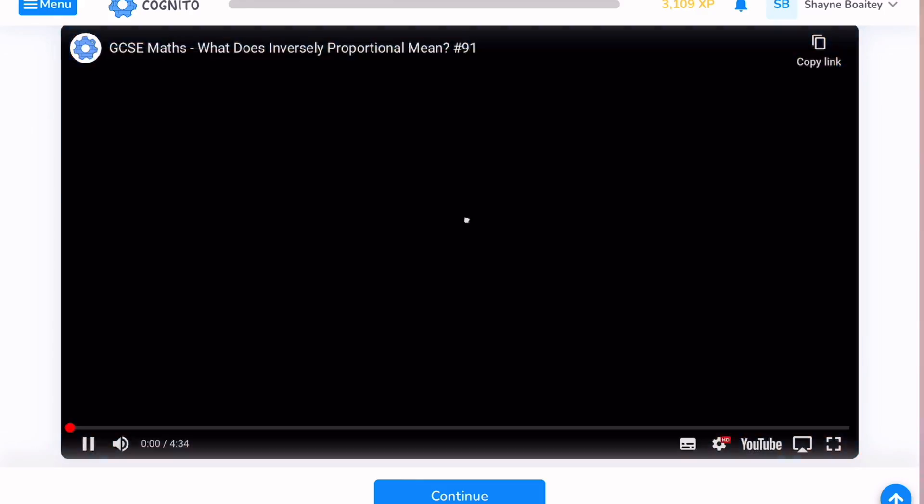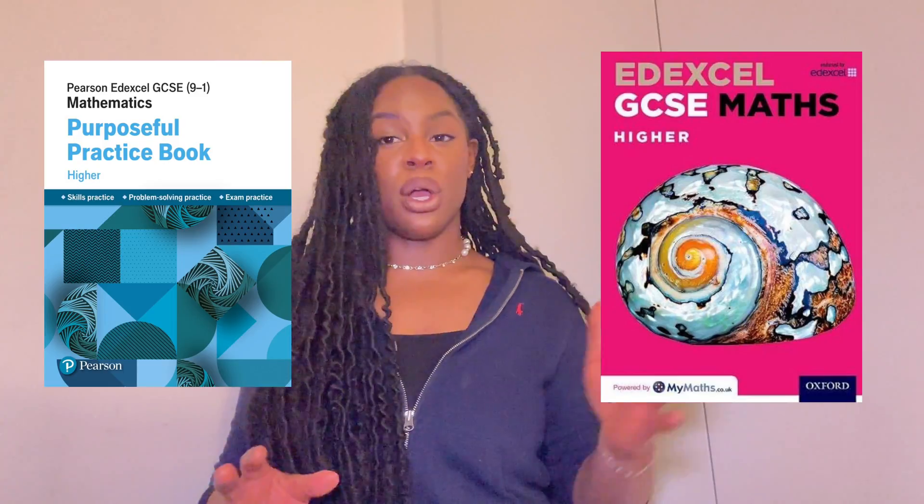Another resource you can use is Cognito. The maths is quite basic on there, but that's really good if you do foundation maths or if you just want to really understand the basics. Cognito has a website that breaks it all down. Everyone learns differently, so you might find it way easier to learn from Cognito than the GCSE Maths Tutor. The last learning resource I recommend is literally textbooks — they have worked examples in them. I'll put a couple on screen that I recommend. You don't have to buy them; you can just download the PDF version, or your school probably has textbooks as well.